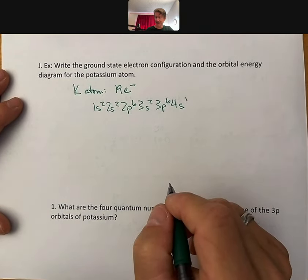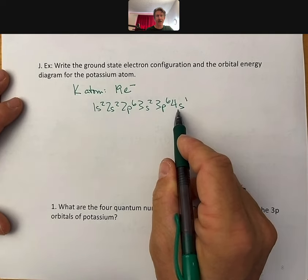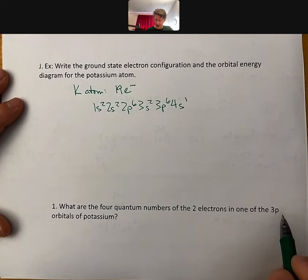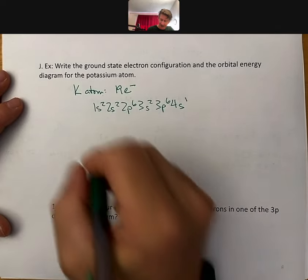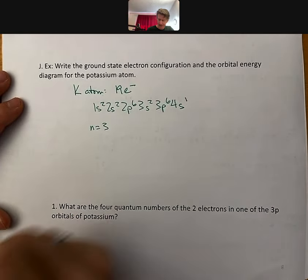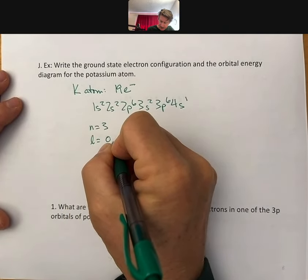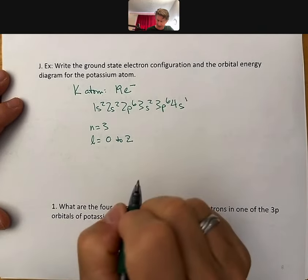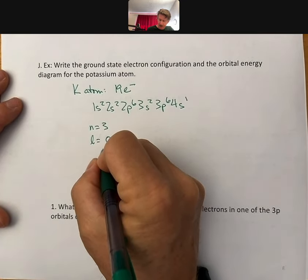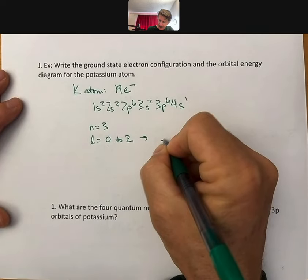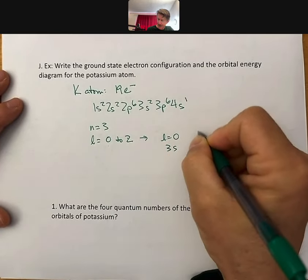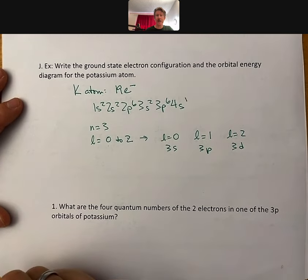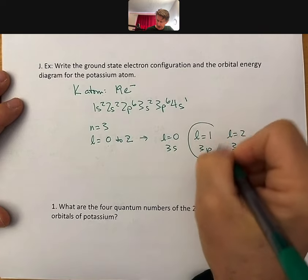As we have seen, 4s is lower in energy for the potassium atom than 3d. But we are doing two electrons in one of the three p orbitals of potassium. Very similar to the last question, except for now, n equals 3. L equals 0 to n minus 1. So, 0 to 2. And since L is 0 to 2, L equals 0 is the 3s, L equals 1 is the 3p, and L equals 2 is the 3d sublevel. We're working with this one here.